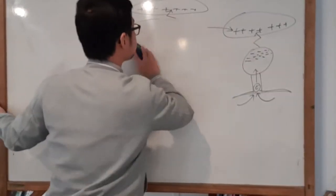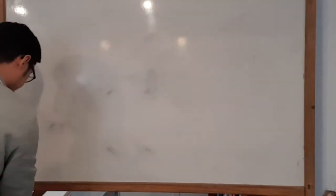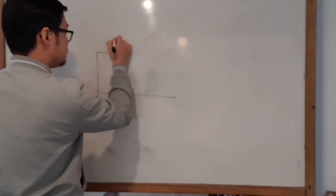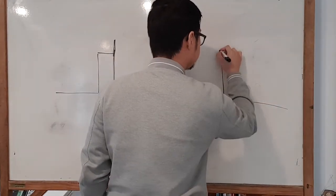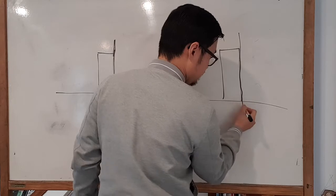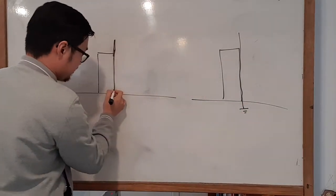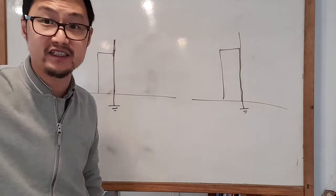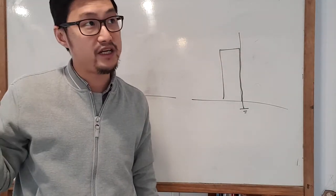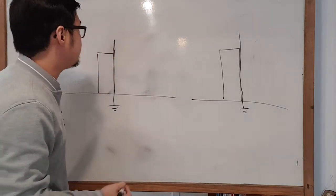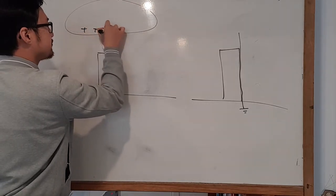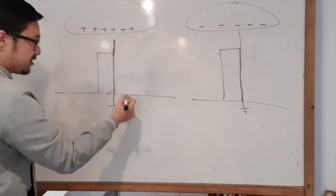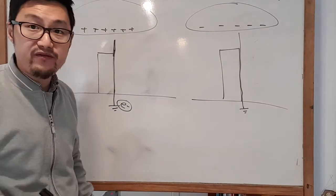Now let's talk about the lightning rod. I'll draw two situations. The rod is buried into the earth — we use this symbol for that. We actually have one in the physics department outside SP3. The rod is buried because there are two situations: the cloud could be positive or the cloud could be negative.